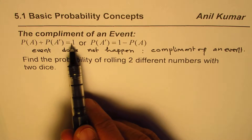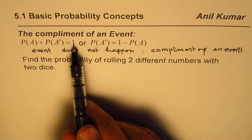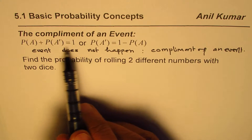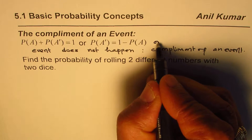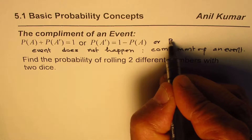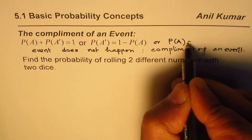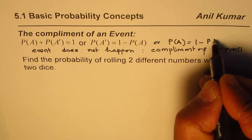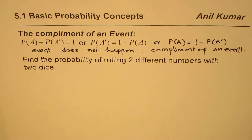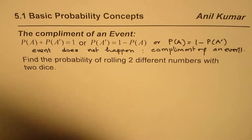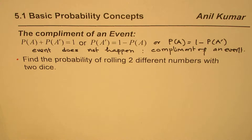In any event, either it will happen or it will not happen, so their combination always equals one. This formula can be rearranged: probability of an event equals 1 minus the probability of the complementary event — that is, the probability of it not happening. That is the core concept.